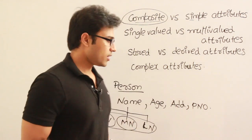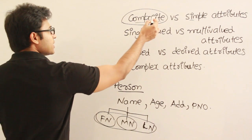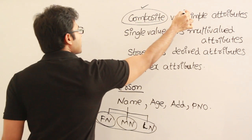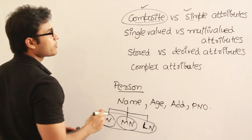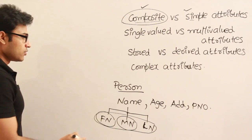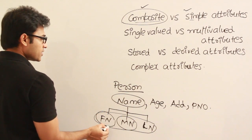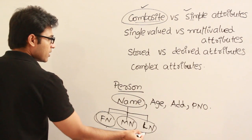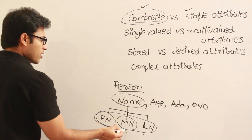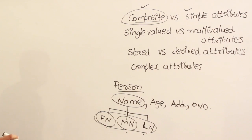So the main difference between composite and simple is: composite is a collection of simple attributes, and simple attributes cannot be divided further. Name is a composite attribute which is a collection of first name, middle name, and last name, and none of those can be divided further.